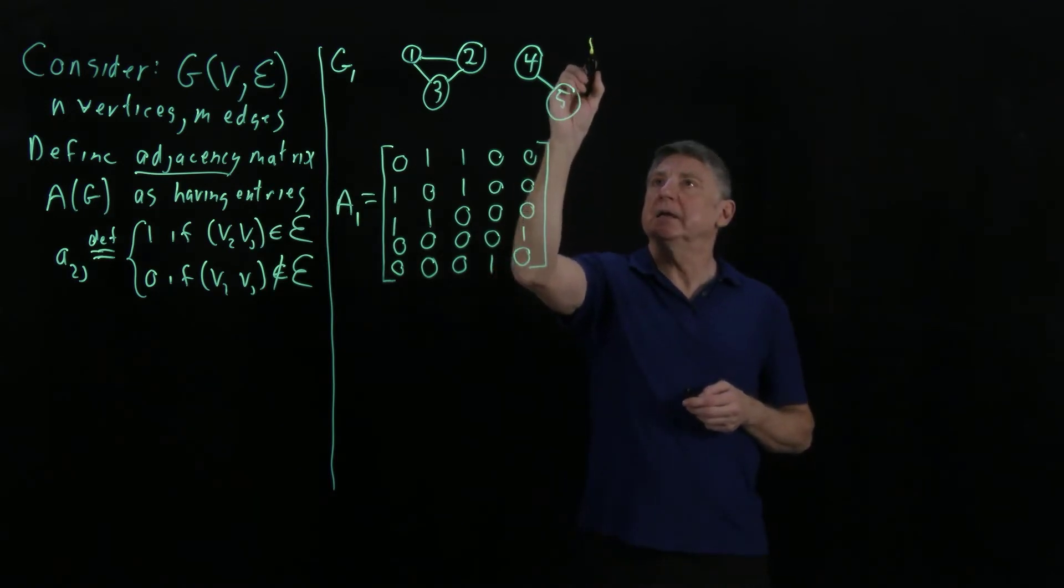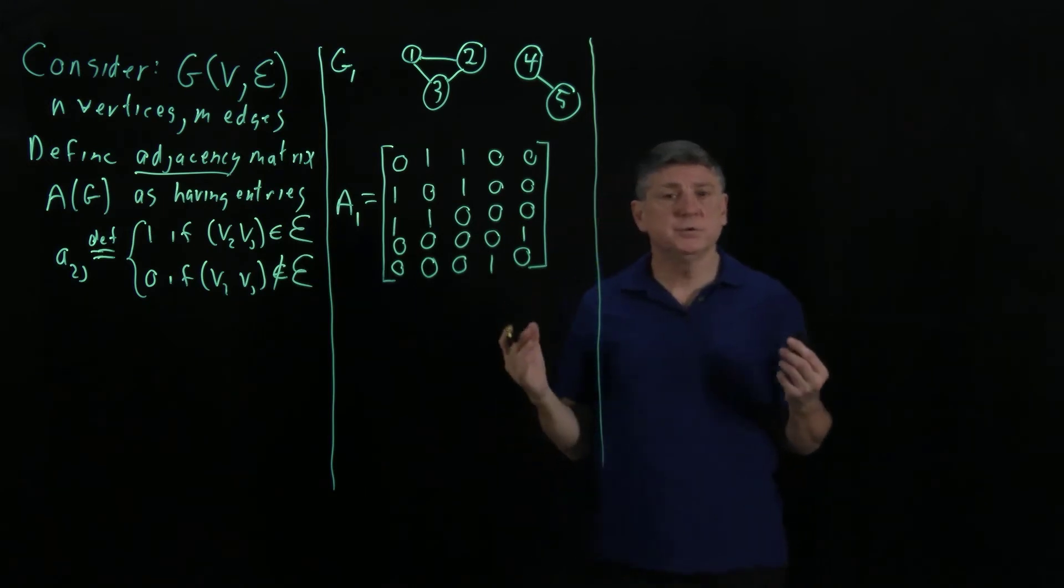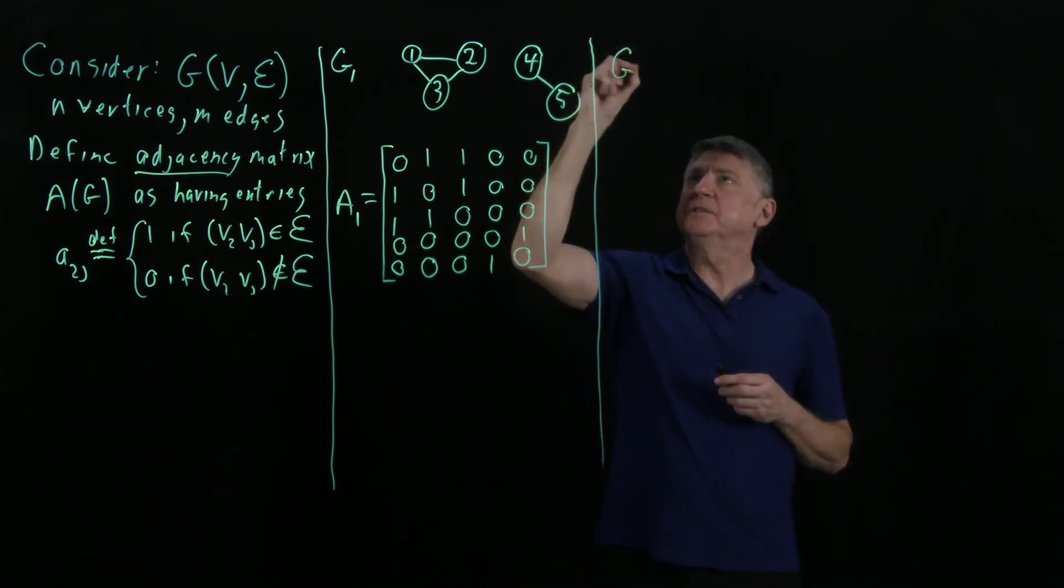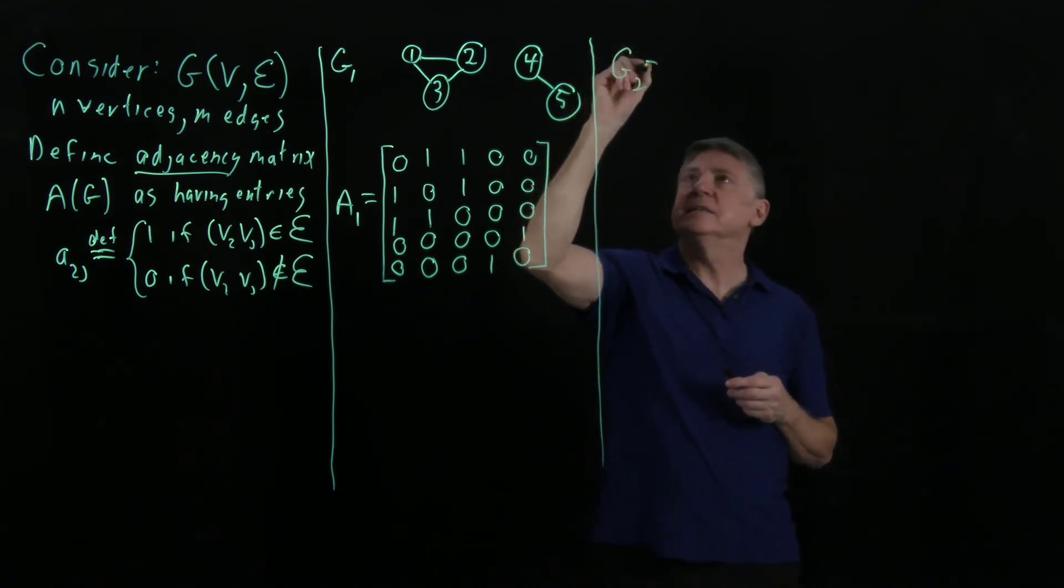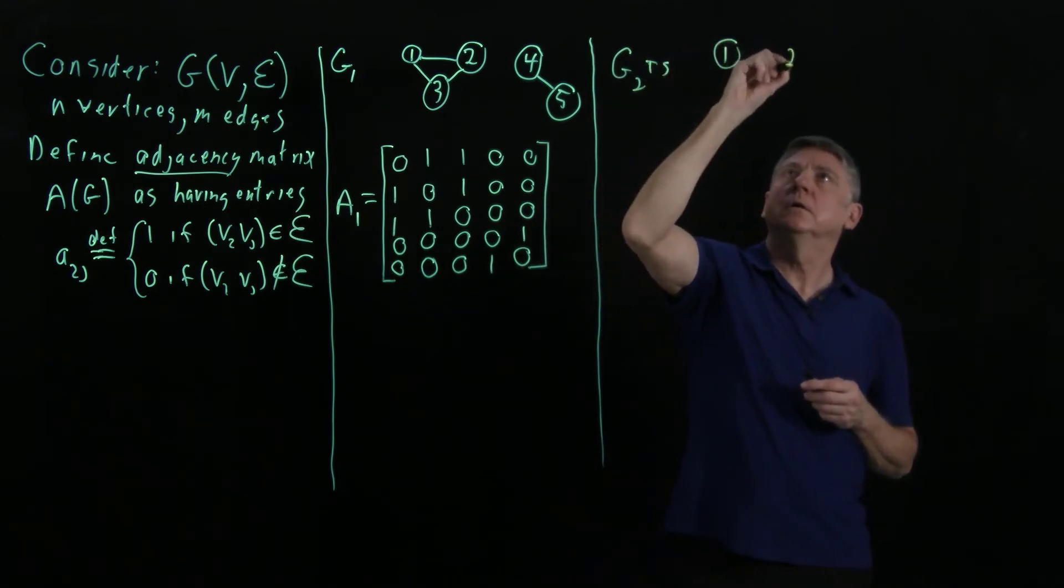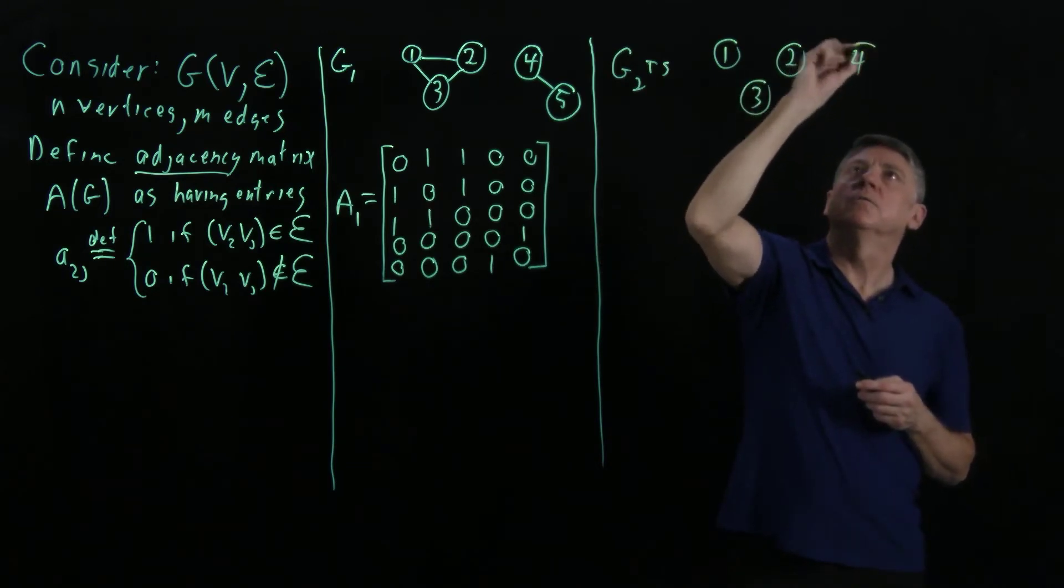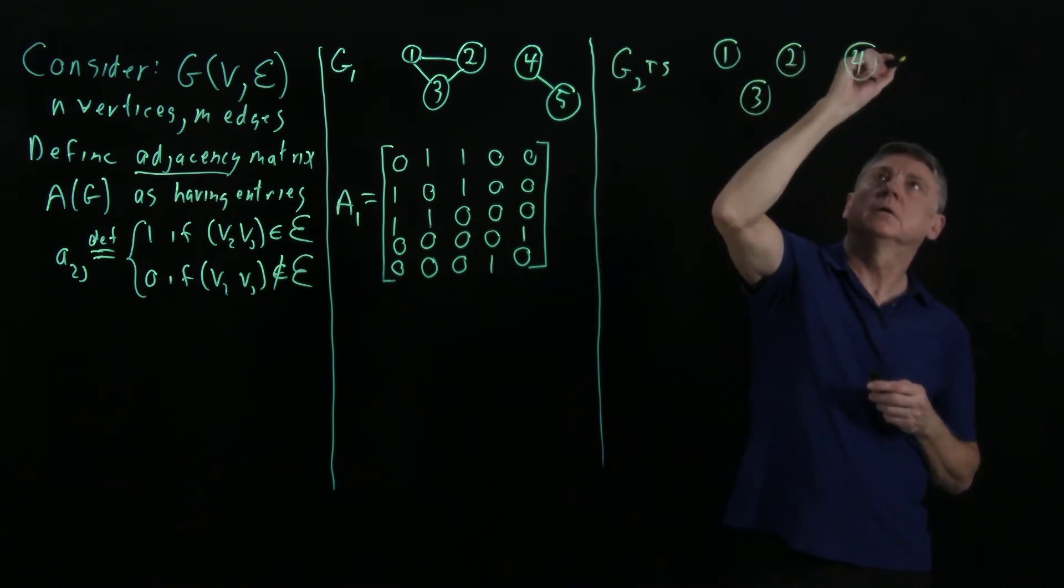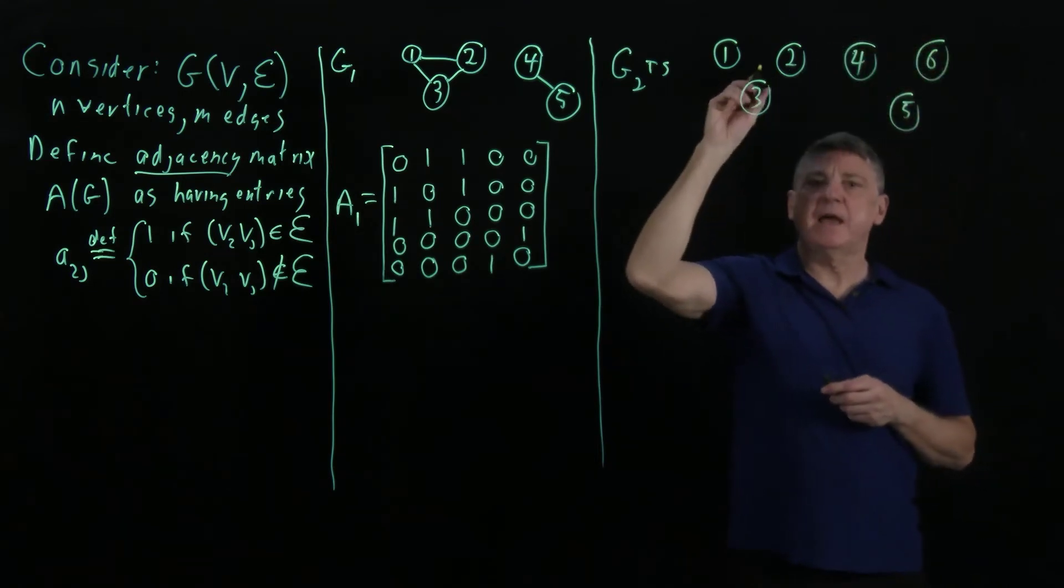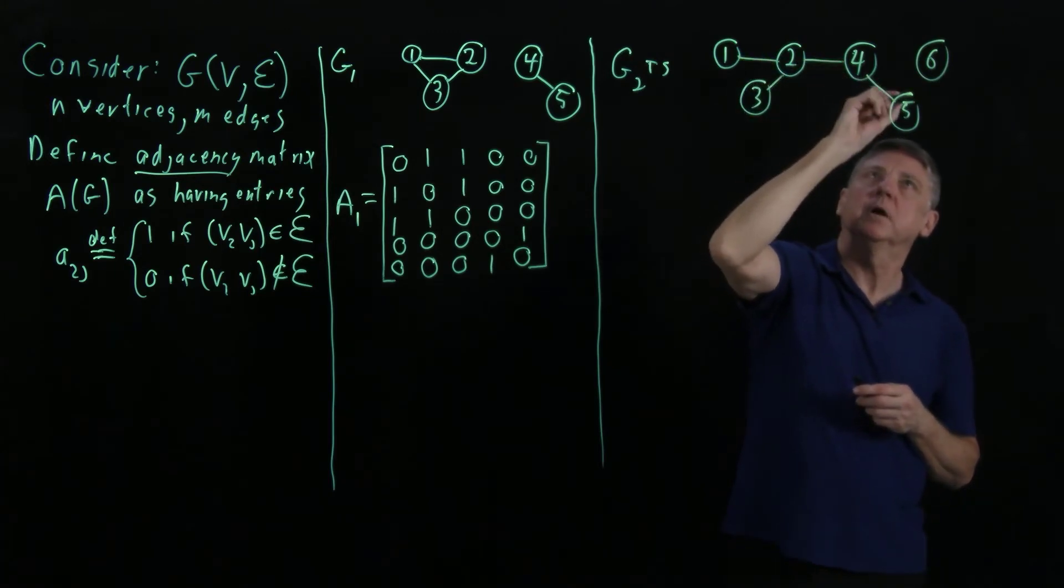Let's take an example of a bipartite graph. And let's use the same example that we've seen in a previous session. So let's say that graph G2 is this. We had 1, 2, 3, 4, 5, 6. And we had this picture from a previous session.